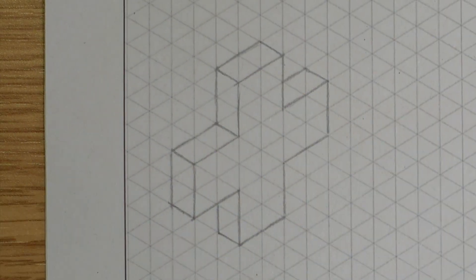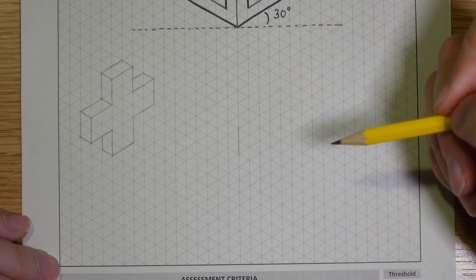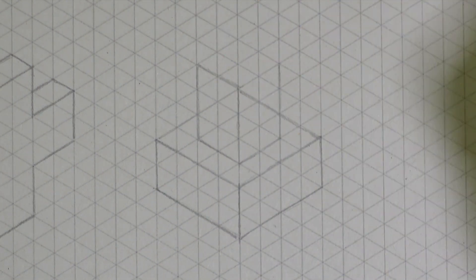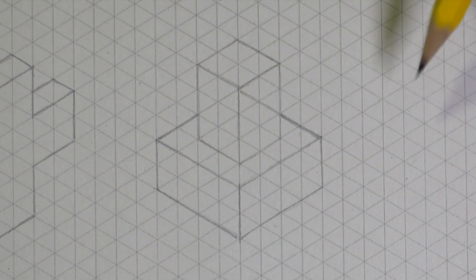One tip I would give at this point when drawing these shapes is to draw one face at a time. I've found that some students will often begin to draw one face, then move on to another before finishing the previous.